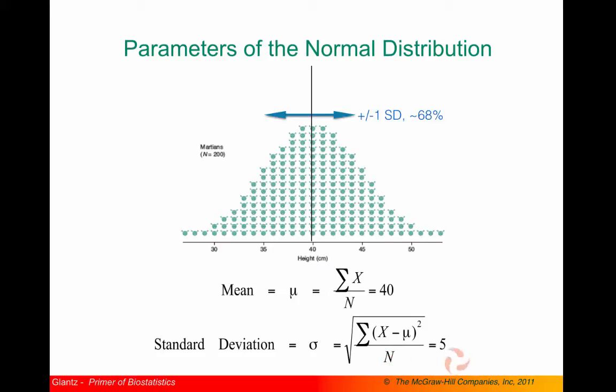Because normal distributions have a consistent shape, the fraction of observations in a particular region of a normal distribution is also consistent. For example, we know that approximately 68% of observed values will be between one standard deviation below the mean and one standard deviation above the mean, with respect to the mean at the center of the distribution.